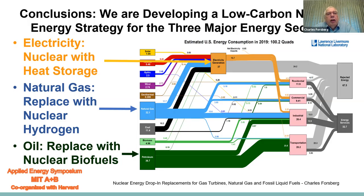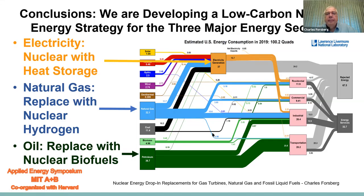In conclusion, we are developing a low-carbon nuclear energy strategy for the three major energy sectors of the United States. For the electric sector, we want nuclear power with stored heat for variable electricity. For natural gas, we propose replacing it with nuclear hydrogen. And for oil, we propose replacing it with nuclear biofuels. Please feel free to contact the authors for backup documentation. Thank you very much.